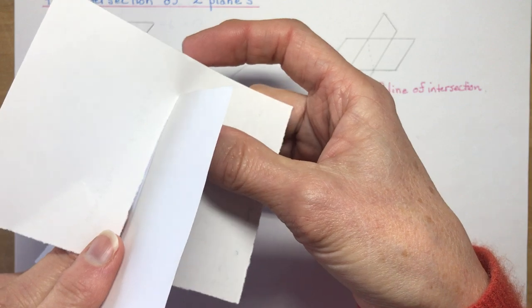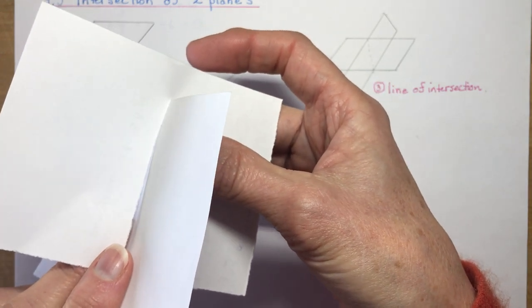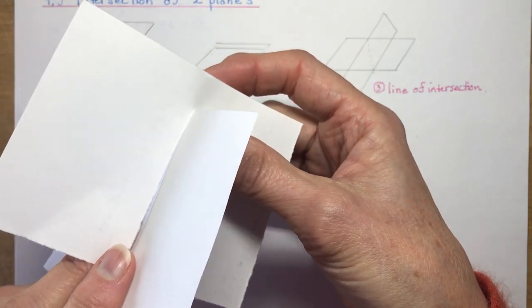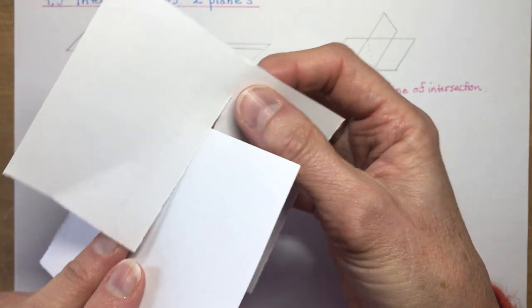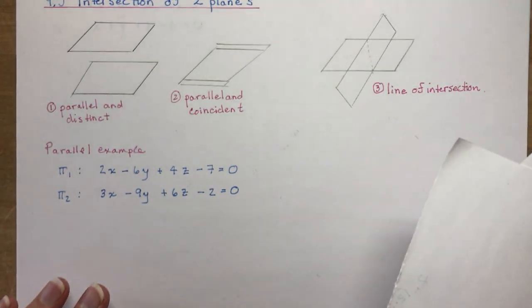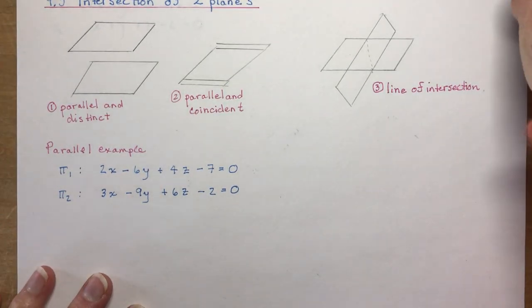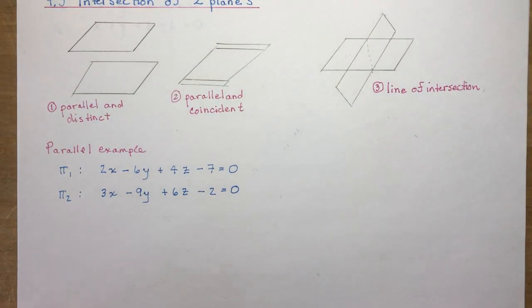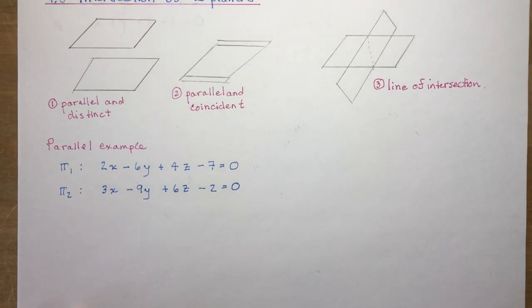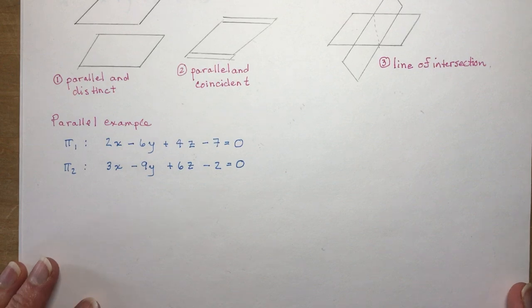That's what we're going to do in this lesson — find the equation of this line of intersection. We're also going to check how to determine if they're simply parallel. The first example I want to do is a parallel example, an easy one.